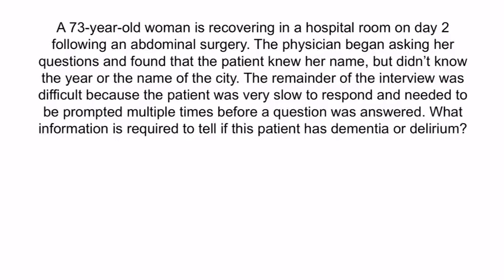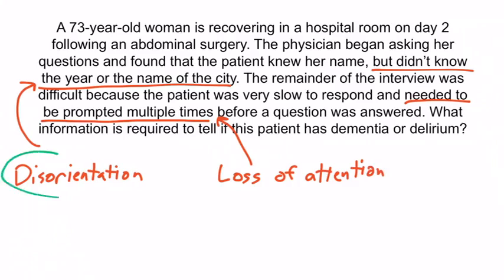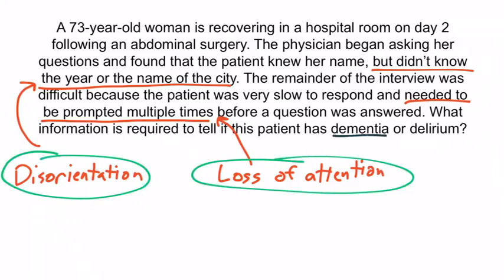A 73-year-old woman is recovering in a hospital room on day two following abdominal surgery. The physician found she knew her name but didn't know the year or the name of the city. The interview was difficult because she was slow to respond and needed to be prompted multiple times. She had disorientation and loss of attention — two cognitive functions not functioning. What information is needed to tell if this patient has dementia or delirium? We need to know when these symptoms started.